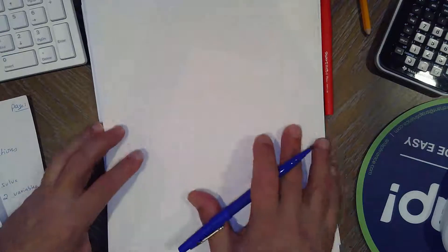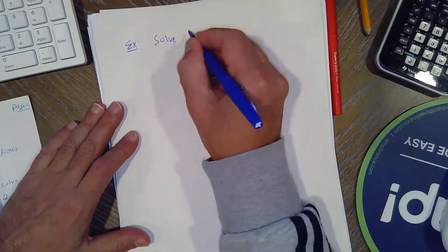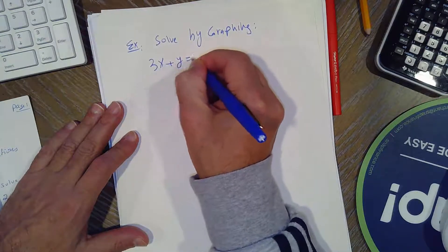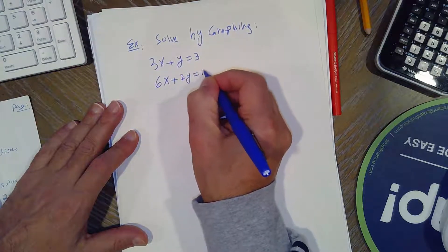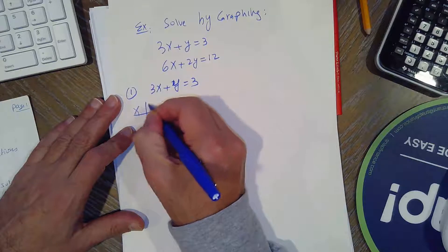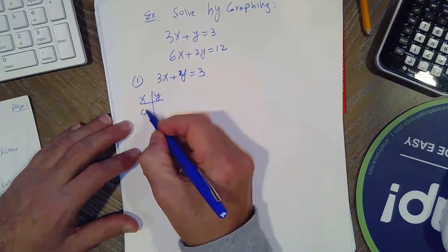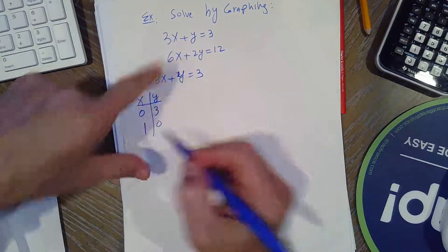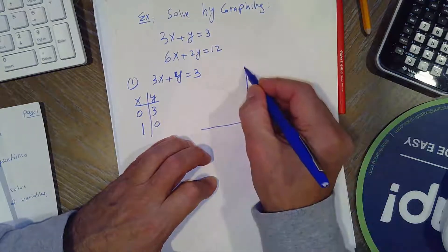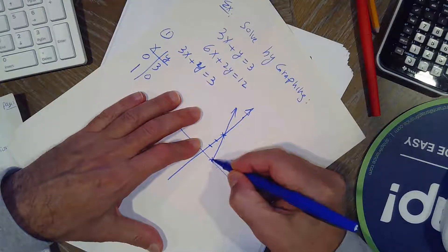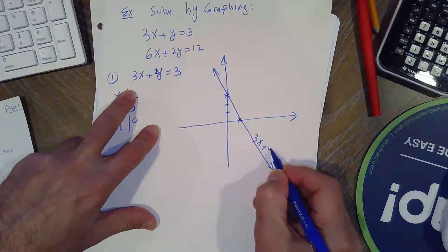Let's see an example. Solve by graphing: 3x plus y equals 3, and 6x plus 2y equals 12. We're going to make a t-chart for each equation. For the first equation, if x is 0 then y is 3; if y is 0 then x is 1. So we get the points (0,3) and (1,0), giving us the line 3x plus y equals 3.